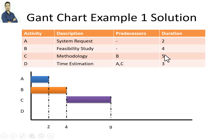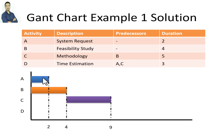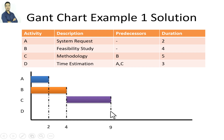Since C depends on B, and B has a duration of 4, then 4 plus 5 equals 9 — so I write 9 as the end point for activity C. Next is activity D, which depends on both activity A and activity C. I look at the chart to see which of them finishes last. Activity C finishes last, so I begin drawing activity D right after activity C.